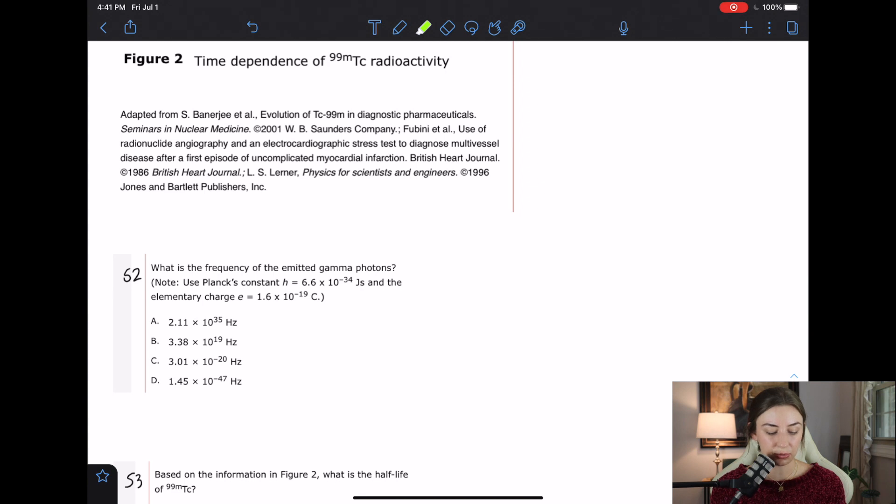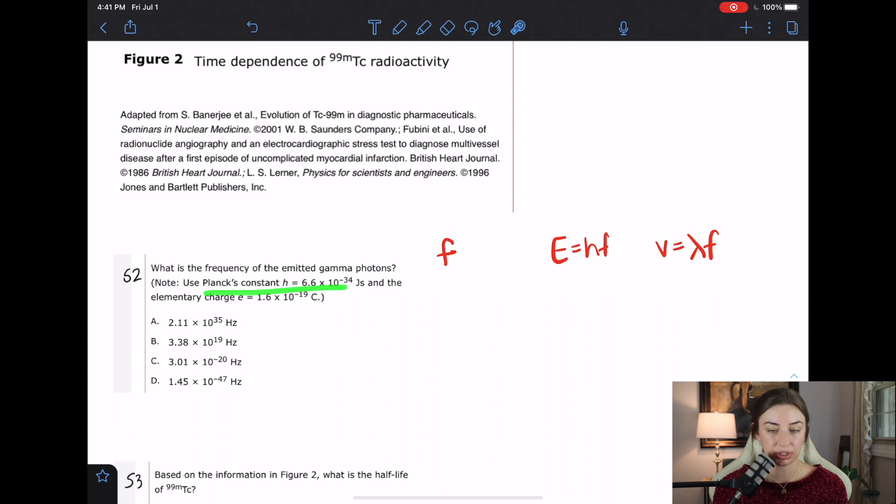The first question says, what is the frequency of the emitted gamma photons? Use Planck's constant and the elementary charge. So I know that I'm looking for frequency, which is F. What equations do I know that include F? I know E equals HF and I also know V equals lambda F. Those are two super common ones where you will see frequency pop up a lot. I noticed that they give me Planck's constant in the question, but that could be a trap. I don't want to tell y'all that everything's a trap in a question, but sometimes in these little notes they can give you stuff that's not necessarily important. Now I need to go back up to the passage to see if I can get any more information about these emitted gamma photons. Booyah!